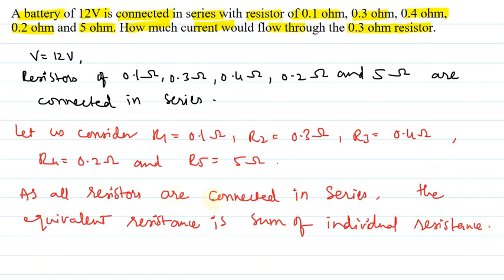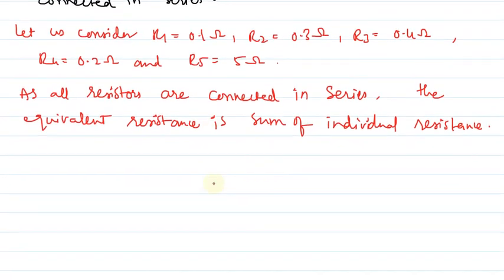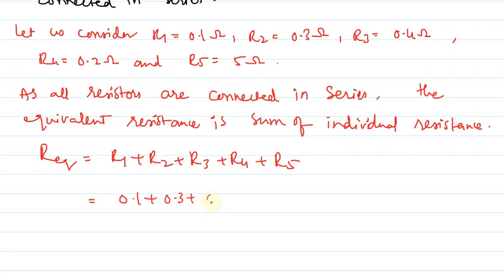The equivalent resistance will be the sum of all the resistances. So R equivalent equals R1 plus R2 plus R3 plus R4 plus R5, which equals 0.1 plus 0.3 plus 0.4 plus 0.2 plus 5.